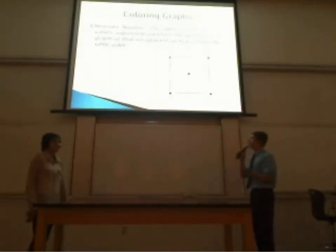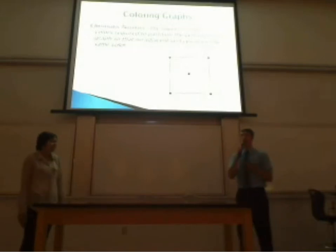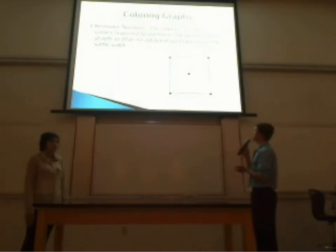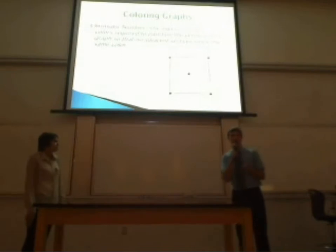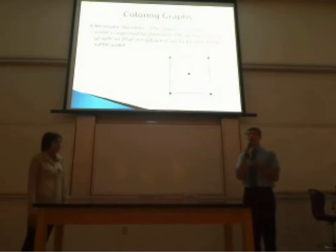So a lot of graph theory deals with coloring the vertices of a graph in different ways in order to partition the vertices into different sets so we can examine the relationships between these vertices. One way to color the vertices of a graph is chromatically, and the chromatic number of a graph is the smallest number of colors required to color the vertices of that graph such that no two adjacent vertices share the same color.